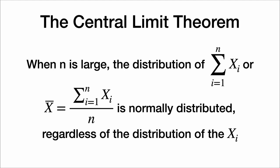The central limit theorem states that when n is large, the distribution of sums or averages of random variables is normally distributed, regardless of the distribution of the original random variable.